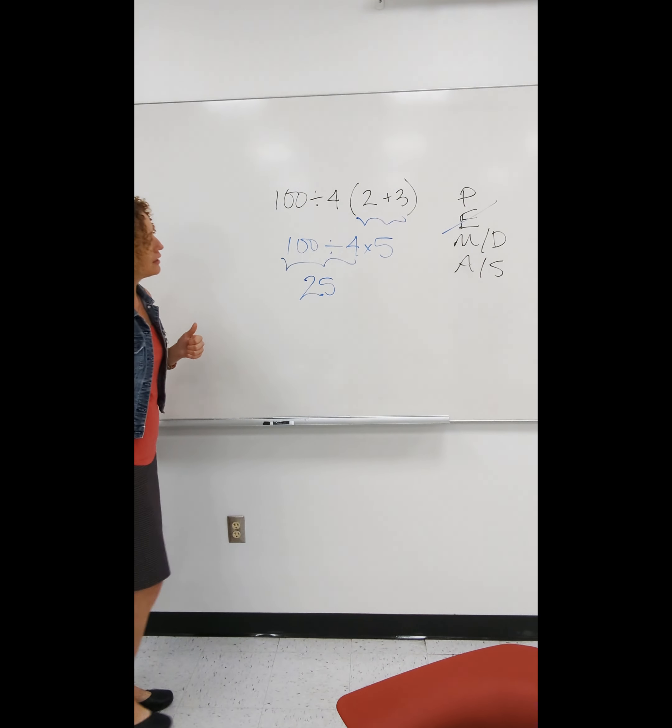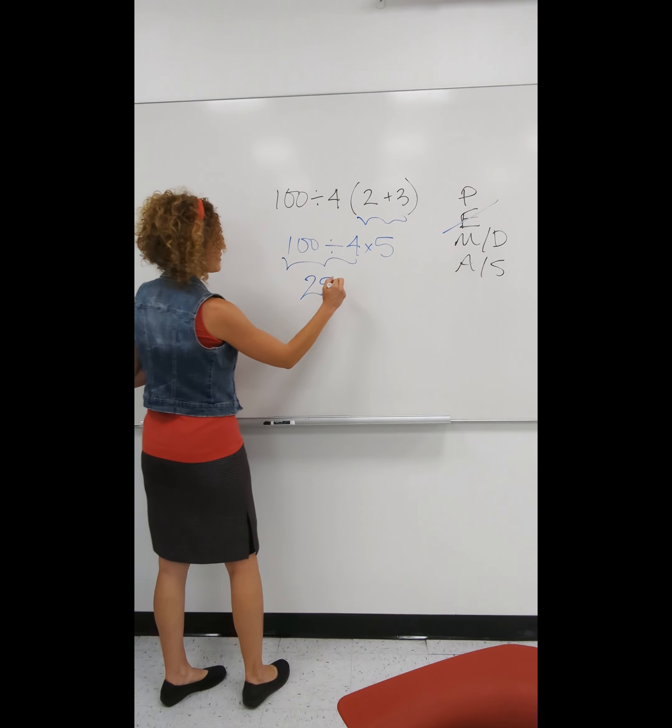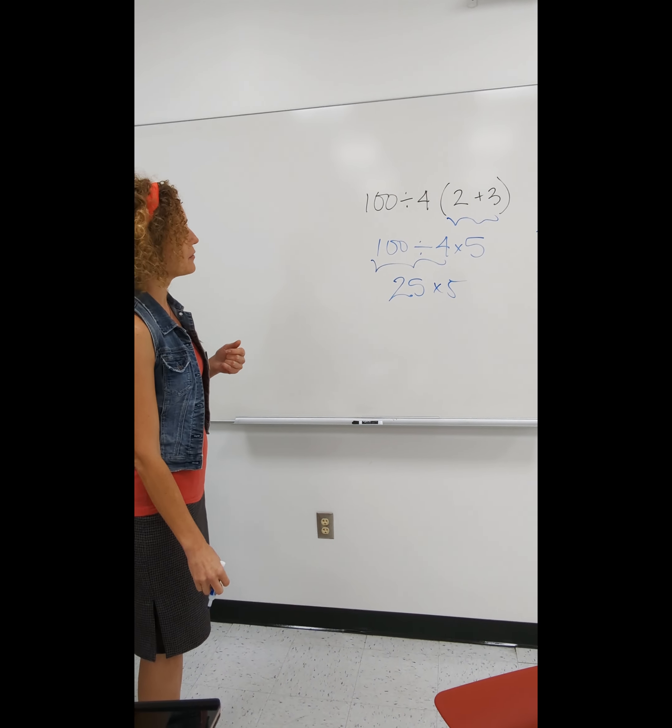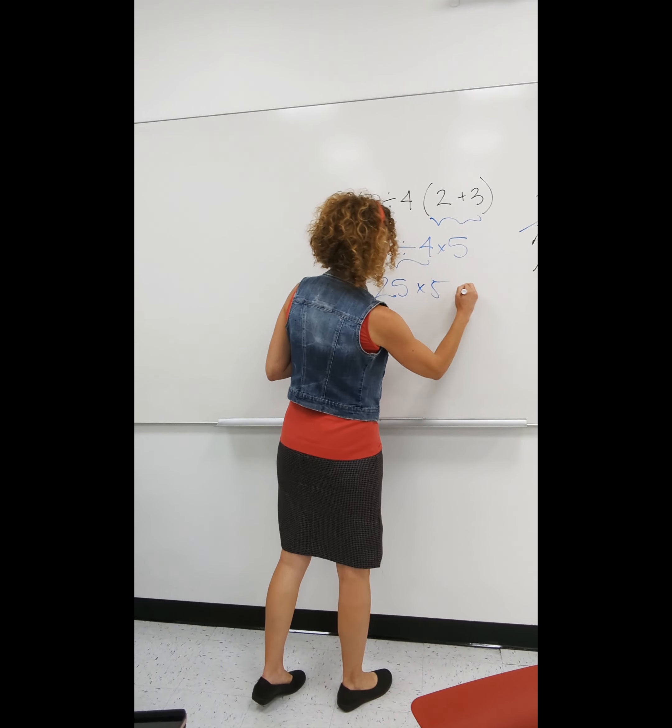Exponents are gone, now we're in this order. Really tempting, we read left to right, think multiply next. It's left to right as we read it this way when you're in that order. So this is what's next.